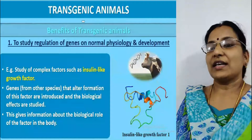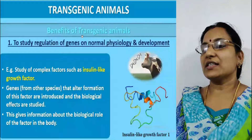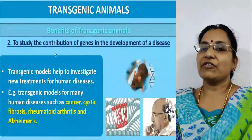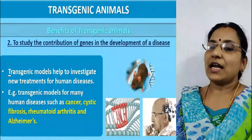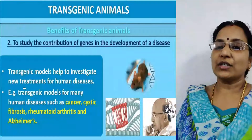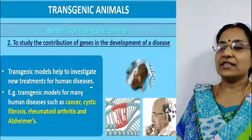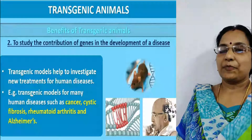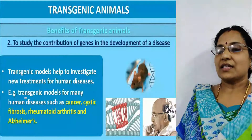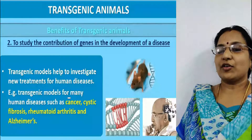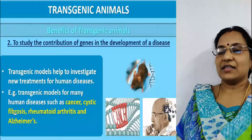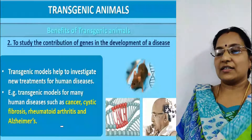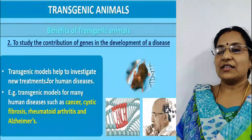The second benefit is to study the contribution of genes in the development of disease. Transgenic models help to investigate new treatments for human diseases, such as cancer, cystic fibrosis, rheumatoid arthritis, and Alzheimer's.